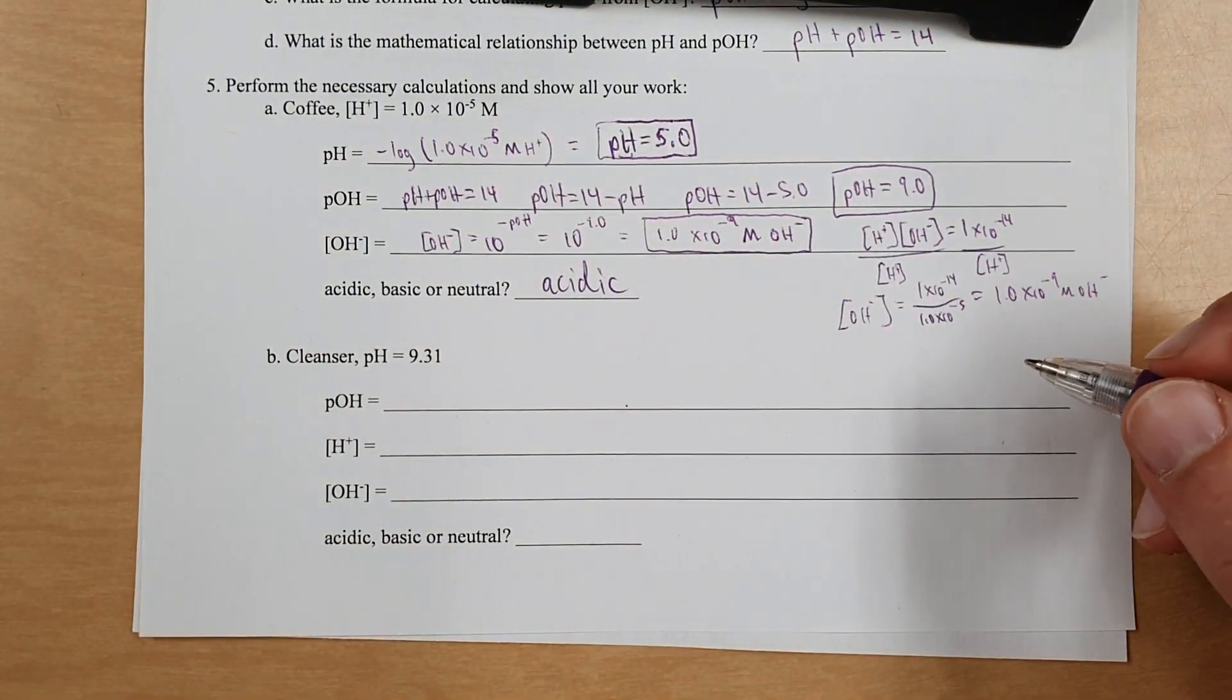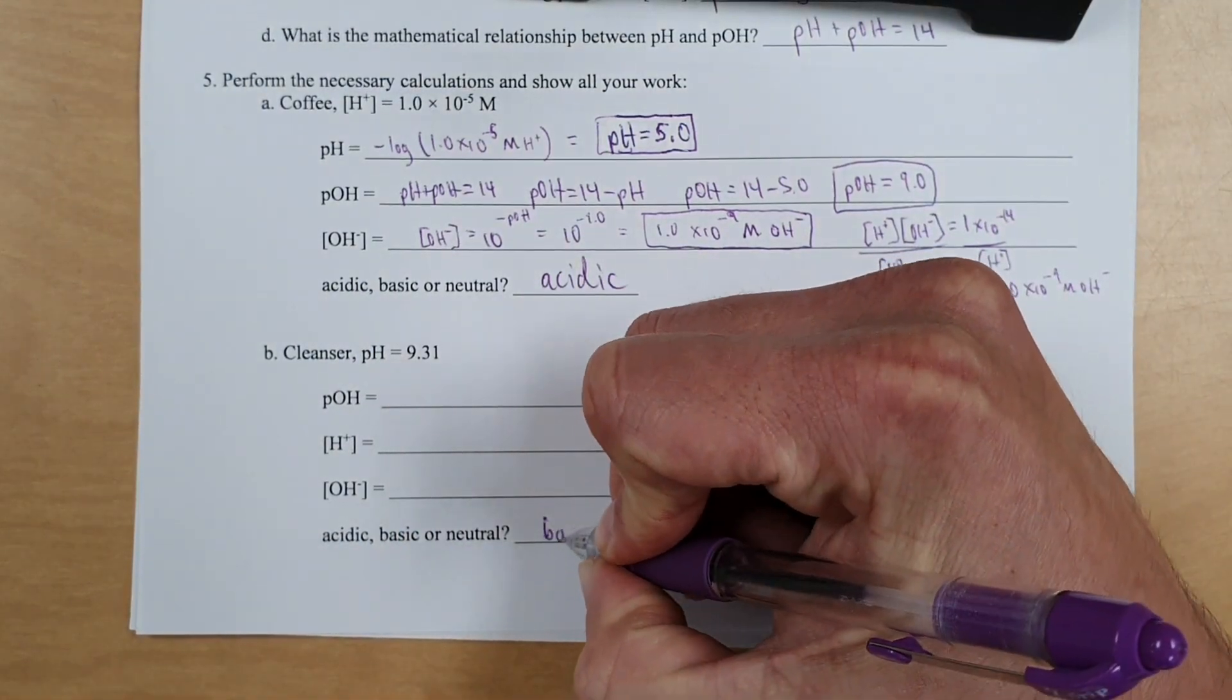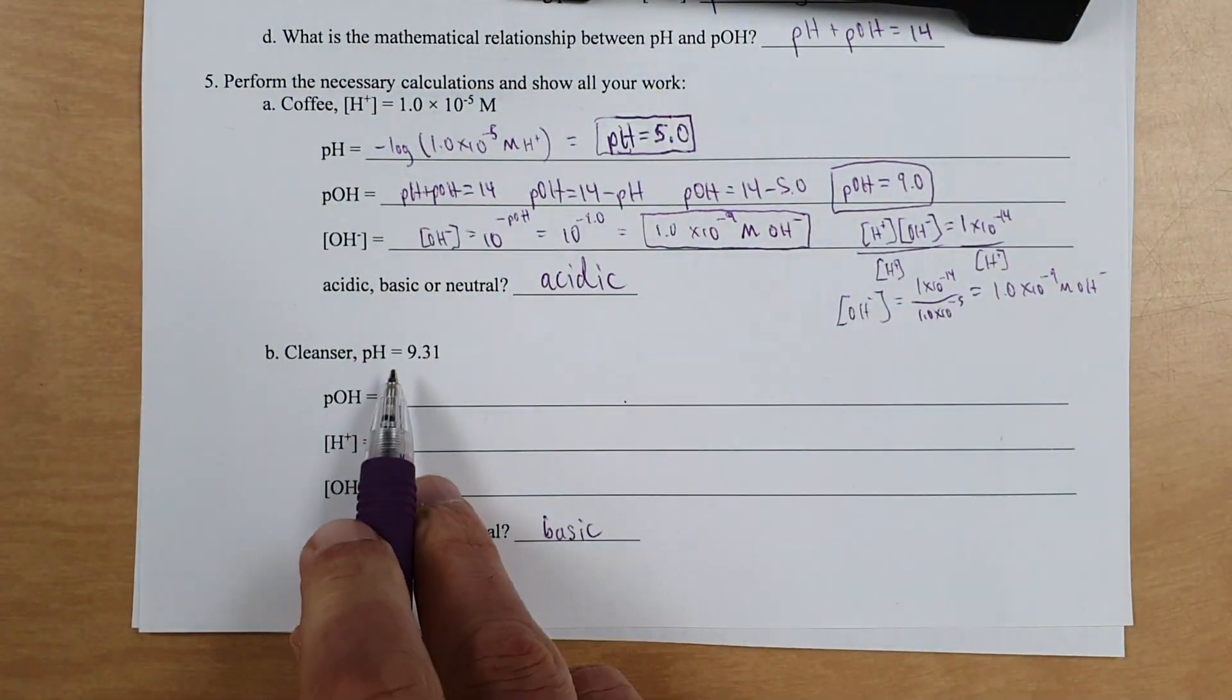So let's look at this situation where pH equals 9.31. I can already tell you it's basic because the pH is greater than 7.